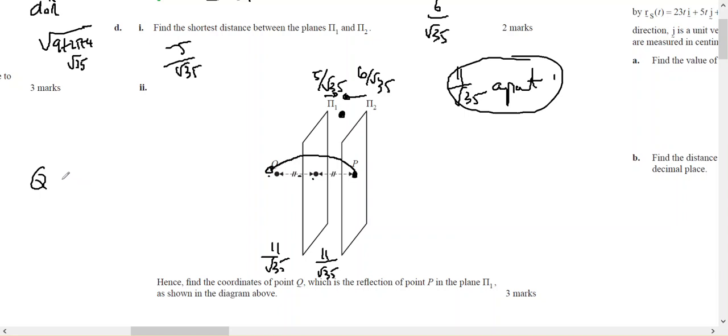Therefore, Q should be point P plus 22 on root 35 in the direction of the normal. And I know from the previous part of the question P is 1, 0, 3.